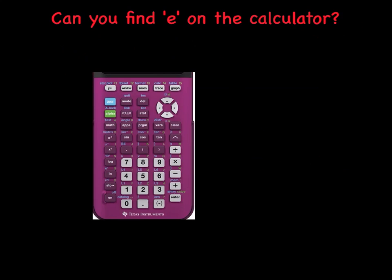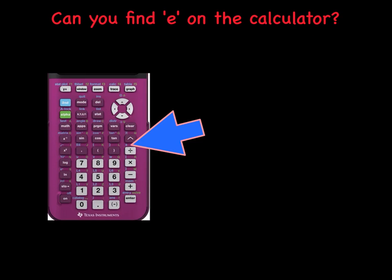We absolutely have to have our calculator for these next exercises. Can you find E on your calculator? It's hiding right here above the division key. Every time we want E, we simply hit second and then the division sign, and that creates our E. There's another one on the other side of the screen — that one automatically creates an exponent, and sometimes we want an exponent, sometimes we don't. If you don't want an exponent, you could always put a 1 in there.